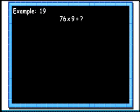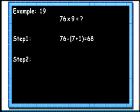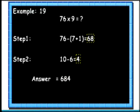Here we will learn how to multiply any number with 9. Let's see an example. Here we will multiply 76 and 9. Step 1: subtract 8 (that is 1 added to the first number) from 76. Step 2: find 10's complement of the last digit 6. Step 3: join both the values together to get the result. So we get the answer as 684.